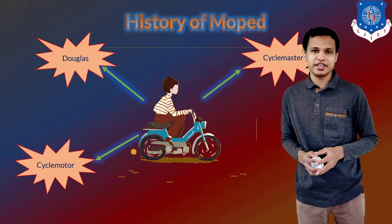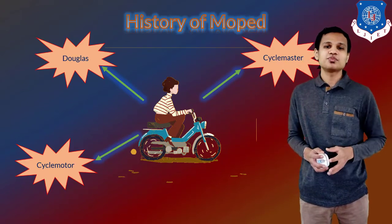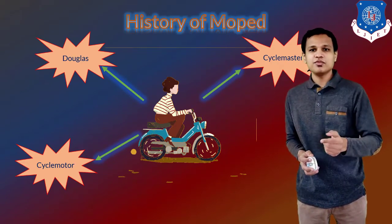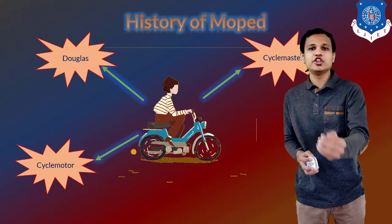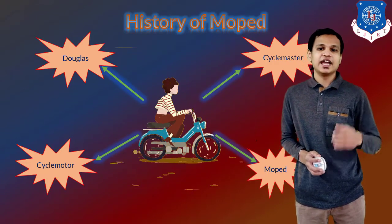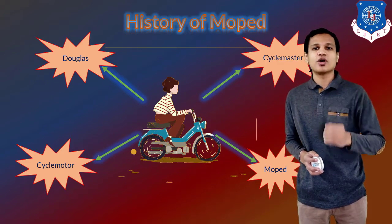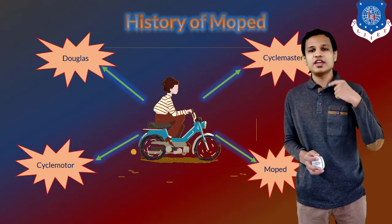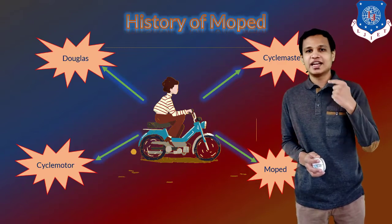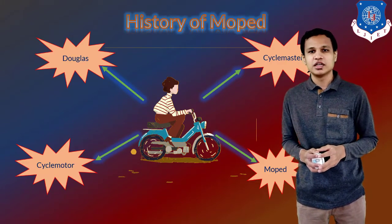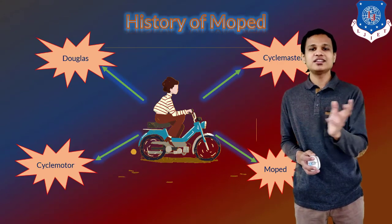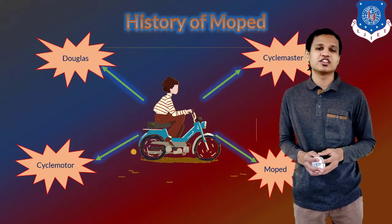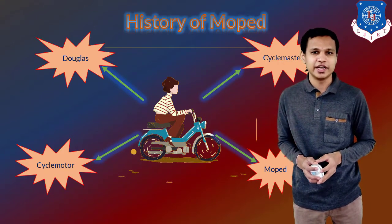After that came the Cyclemaster. In the case of the Cyclemaster, the transmission provided was based on the CVT system, and the same technology was given on the moped with a new ergonomic design. And lastly came the moped better known as the Luna. In the case of the Luna, we have to pedal the vehicle to start it, and after starting we can either run it on petrol or run it as a bicycle. So these are the histories of the mopeds, which came from the cycle motor, Douglas, then Cyclemaster, and at last the Luna.